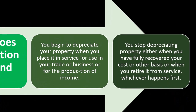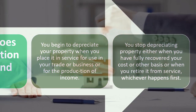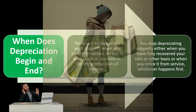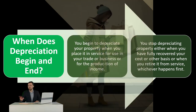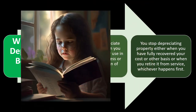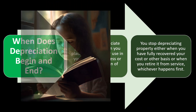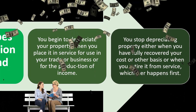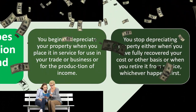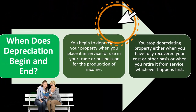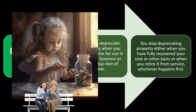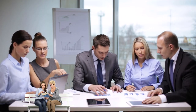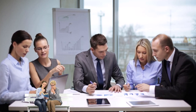You stop depreciating property either when you have fully recovered your cost or other basis, or when you retire it from service — whichever happens first. For example, if we purchase something for $100,000, we put it on the books when we place the equipment in service for our trade or business. If you had to include shipping costs to get it ready and in service, you'd include those at the point it's in service. You might use a mid-month or mid-year convention, depending on what's required, and then allocate that $100,000 over the useful life.